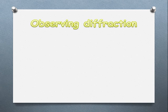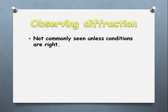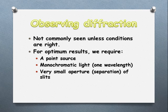To observe diffraction, we're only going to see it when we have the right conditions. What we want is a point source that produces monochromatic light — so we've got the one wavelength — and it needs to pass through a very small aperture, which is the slit itself.